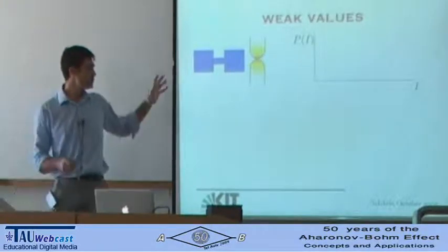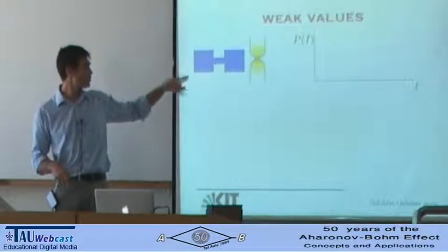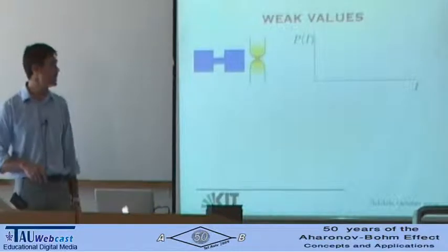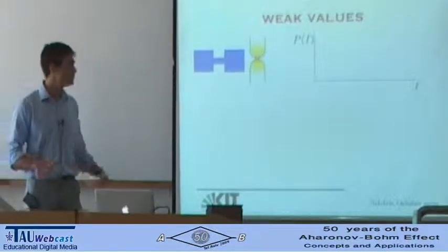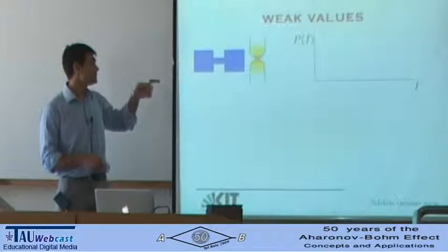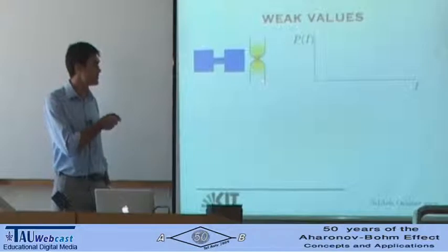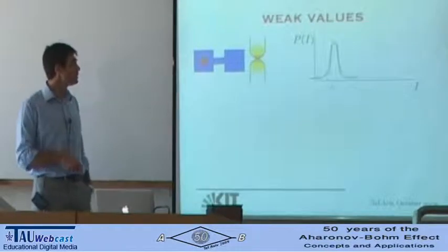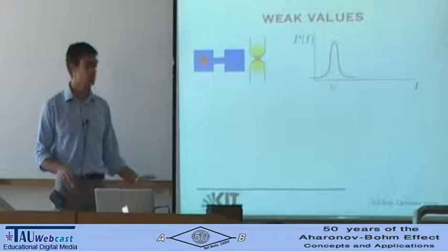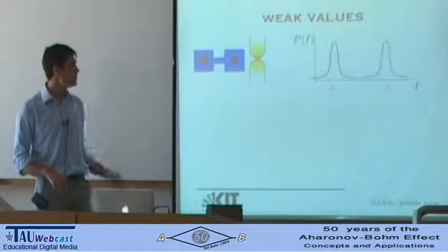The schematic system is the following: you want to measure an electron which can be in either the left or the right box, and we do it with some detector. What is important is that this detector gives you a response function — a probability to measure a certain current. If the electron is on the left, you have a certain distribution for the current; if the electron is on the right, you have a different one.